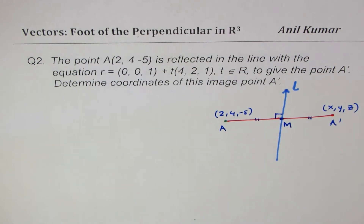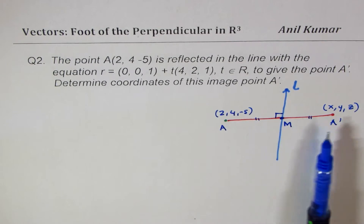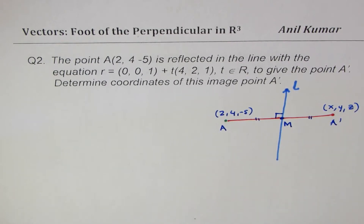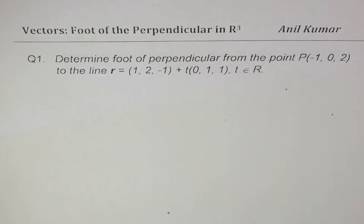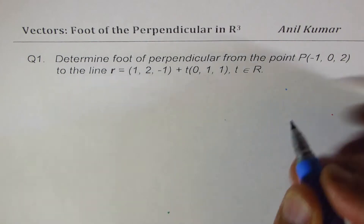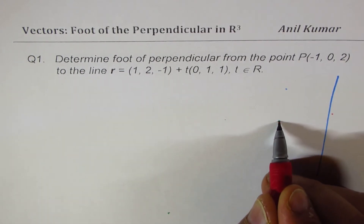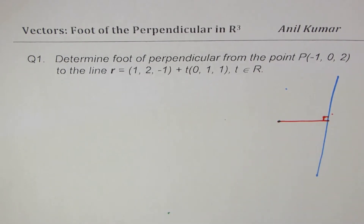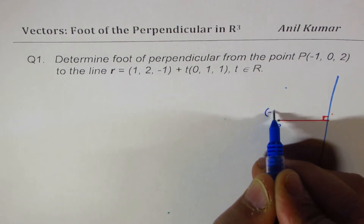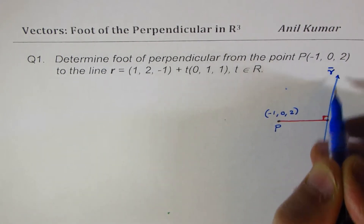To make it more meaningful, I've introduced one more question. We'll do a simpler question first — just understand how to find the midpoint — then get back to this question to calculate the image. So let's begin with question number one: determine the foot of perpendicular from the point P to the given line. We have a point P(-1, 0, 2) outside the line, and we need to find point M on the given line R.